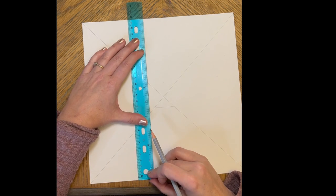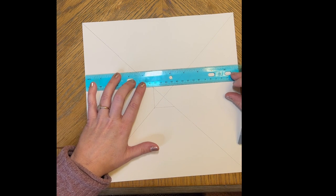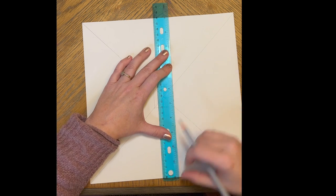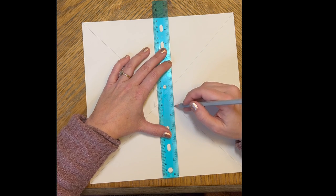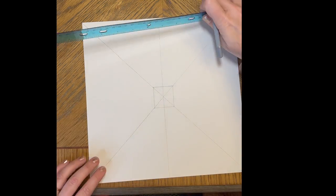I'm just lining up the edge of my ruler with the edge of the paper just to make sure that line is perfectly straight or as close as I can get to it. Next we'll divide the paper in half in both directions.